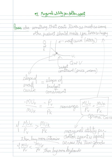The basic idea is that something that costs basically twice as much as some other product should make you twice as happy.